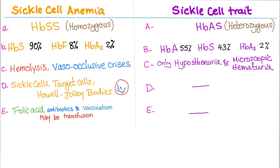Symptoms in sickle cell anemia include hemolysis and vaso-occlusive crises, which include dactylitis, acute chest syndrome, autosplenectomy, and more. In sickle cell trait we have only hypostenuria, which is an inability to concentrate urine, as well as microscopic hematuria. Please note that in sickle cell trait you can also have renal papillary necrosis.